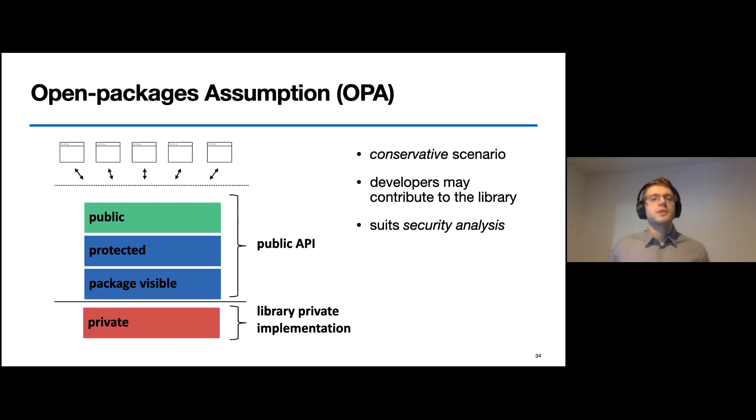After we have now considered how libraries can be extended, we must now also think about how applications can access them. So let's start with a sound and conservative scenario, which we call open package assumption. In this scenario, application developers are able to add their own classes to library packages. And in consequence, they can access all non-private methods, which then must be considered as entry points.